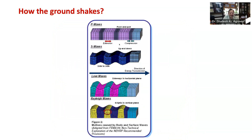Surface waves consist of Love waves and Rayleigh waves. As shown in the figure, under P waves, material particles undergo elongation and compression in the direction of energy transmission. Whereas under S waves, the material oscillates at right angles to the direction of energy transmission. Love waves, which are surface waves, cause surface motion similar to secondary waves, whereas Rayleigh waves make material oscillate in an elliptical path.